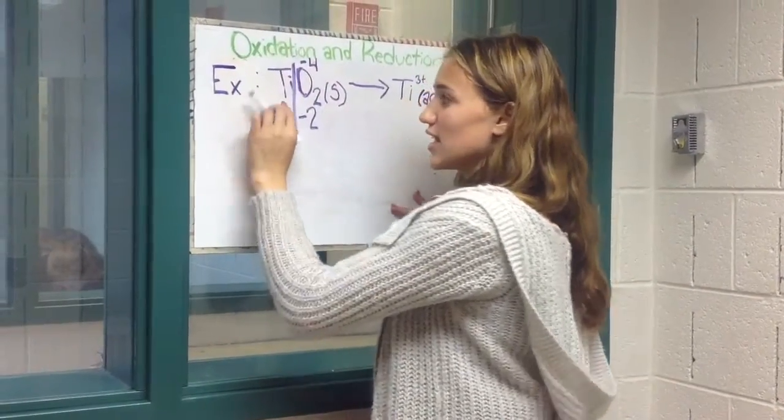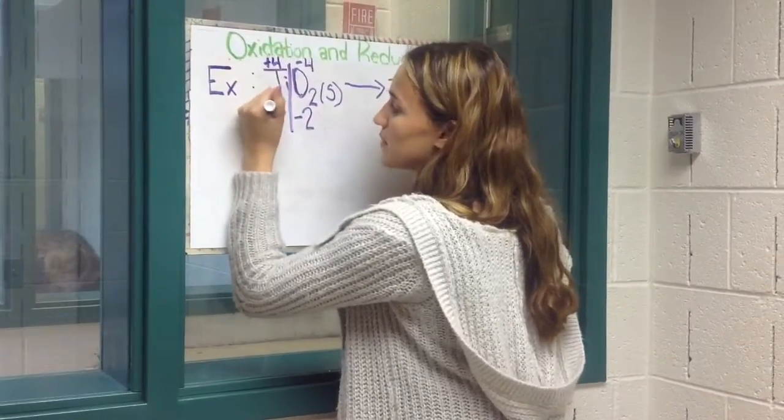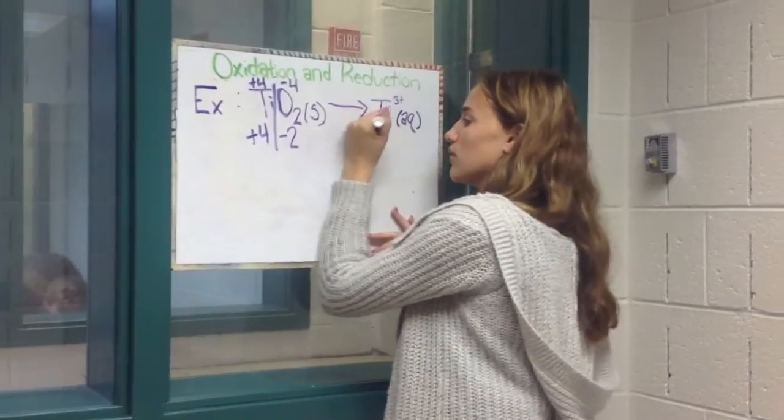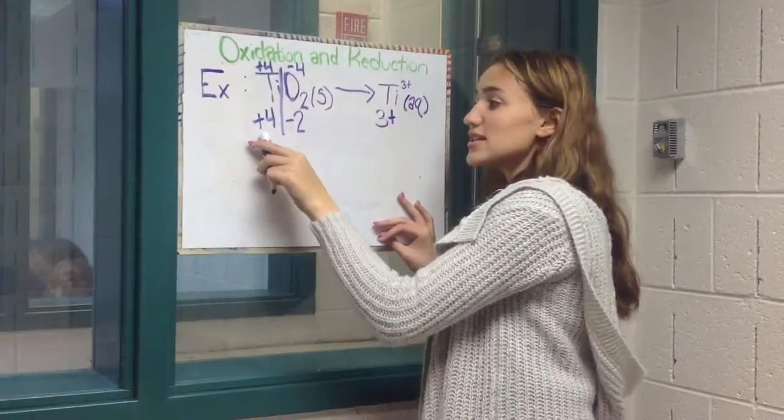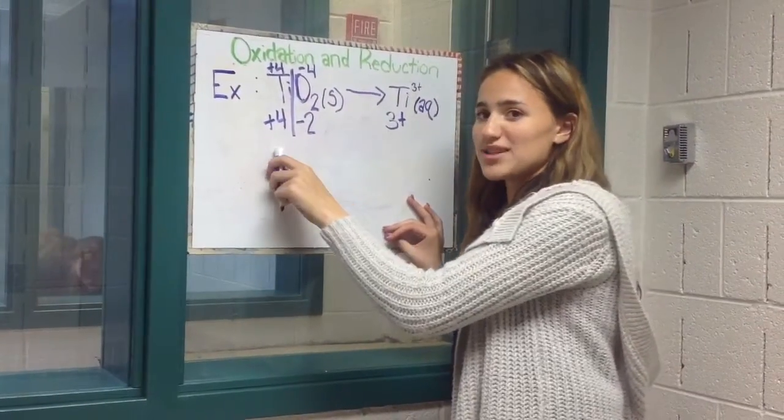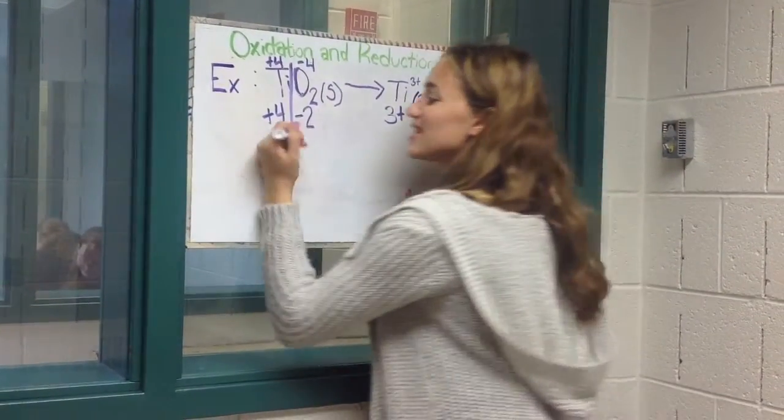So titanium must have a plus 4 charge. So down here it's plus 4. Over here, however, it already has a 3 plus charge, so it will remain 3 plus. This is the gaining of electrons for titanium, since it goes from a positive 4 to positive 3. So it's a reduction.